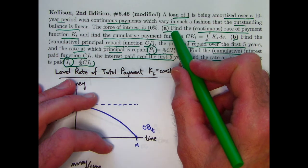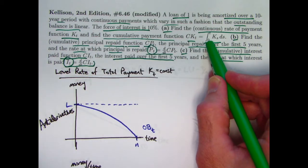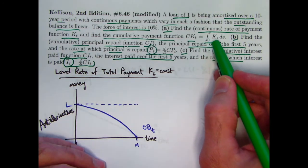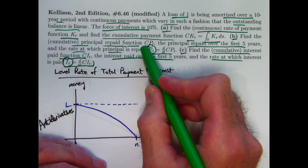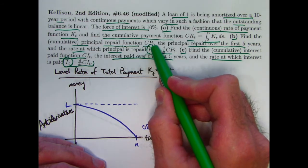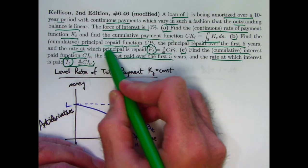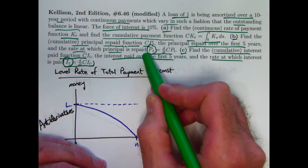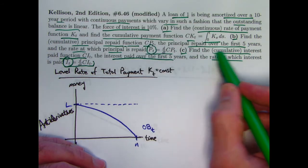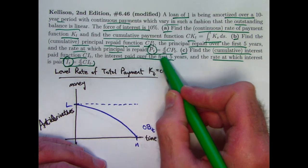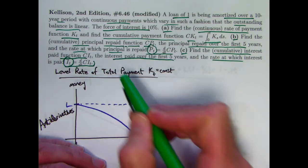In each part there are a few things to do. Part A: find the continuous rate of payment function KT and its integral, the cumulative payment function — how much have you paid cumulatively over time, not taking the time value of money into account. Part B: find the cumulative principal repaid function CPT, plug in T=5, and find its derivative P-bar T — Kellison uses that notation. Part C: find the cumulative interest paid function CIT, also over the first five years, and find its derivative I-bar T, the rate at which interest is being paid.